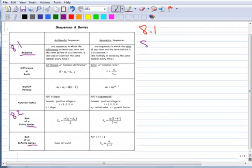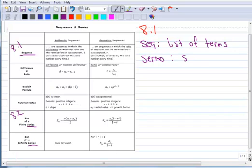A sequence is a list of terms, like numbers. And a series is a sum.